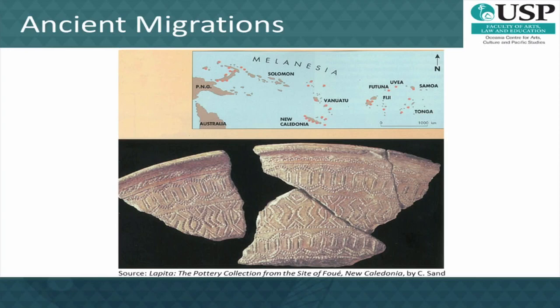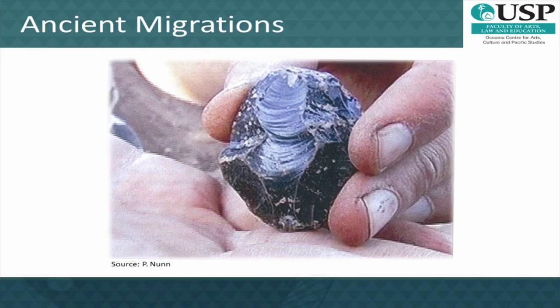Lapita may be looked at in terms of continuities and discontinuities in relation to the preceding Pleistocene early Holocene period. A case for continuity is apparent in the exchange system in place for at least 20,000 years, consisting primarily of obsidian, volcanic glass, and a trend towards increasing exploitation of marine resources since the early Holocene. Also, a regional interactive model and mutual transformations of practice before, during, and after the appearance of Lapita have been proposed for understanding the development of horticulture, small-scale agriculture, and arboriculture — the cultivation of trees — in New Guinea and adjacent islands, which later spread to other parts of the Pacific region.